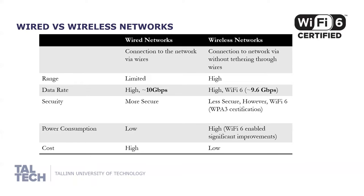Power consumption is another important parameter when looking at communication between different devices. In wireless communications, power consumption has traditionally been high, but Wi-Fi 6 has enabled a significant improvement, meaning we will have lower power consumption — not quite comparable to wired networks but better. In terms of cost effectiveness, the cost of installing a wired network is really high, while the cost of installing a wireless network is very low.